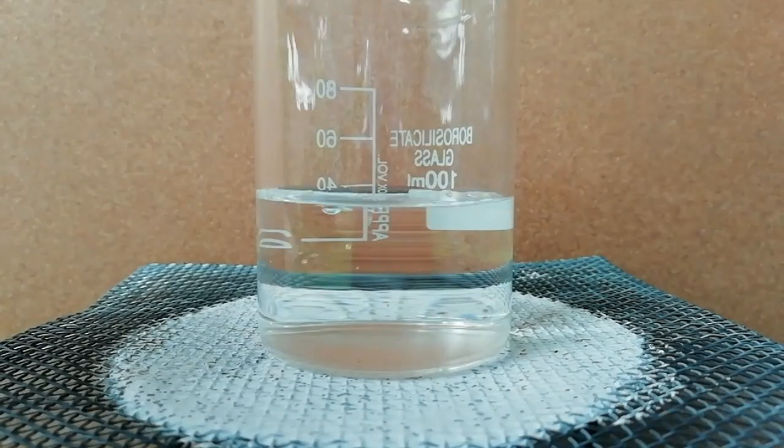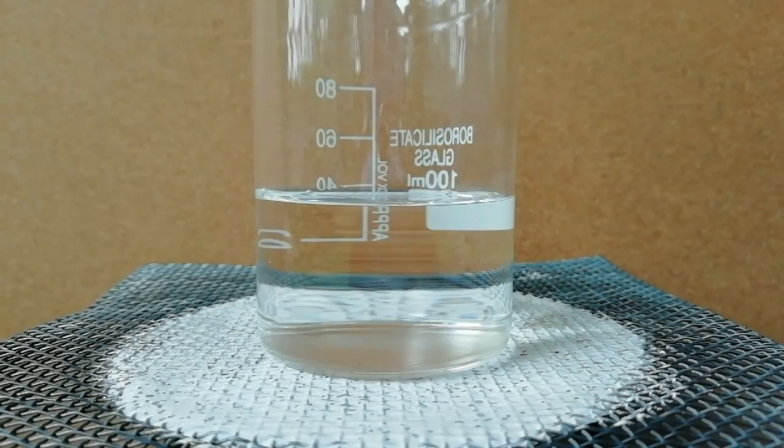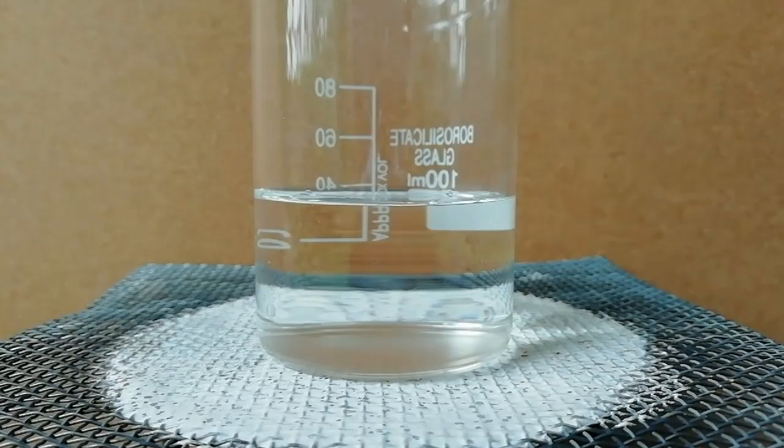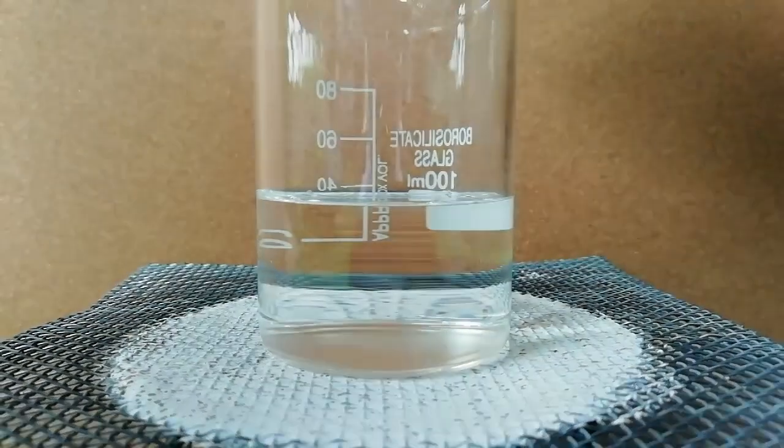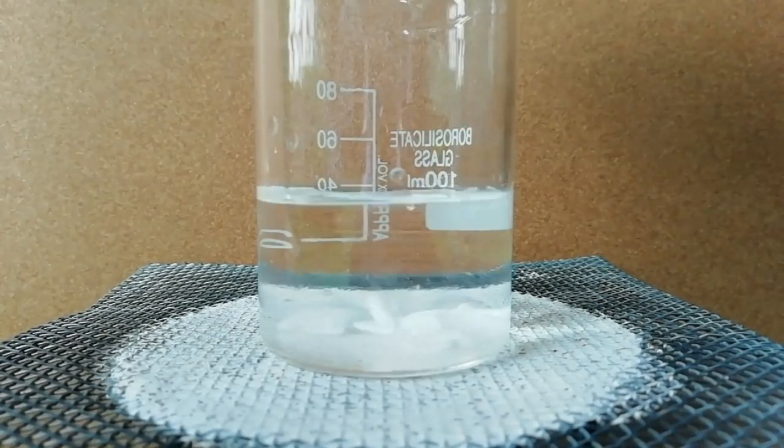To start the reaction, I added 40 milliliters of distilled water into a beaker, then I dissolved 2.6 grams of potassium hydroxide. Then I started to heat the beaker, after that I added iodine crystals slowly.